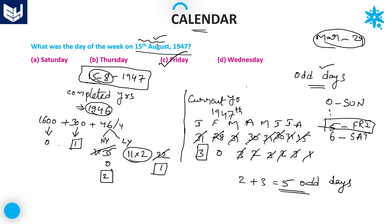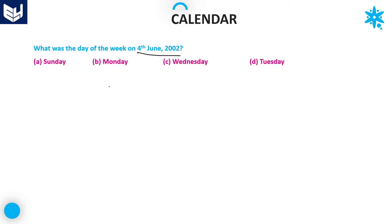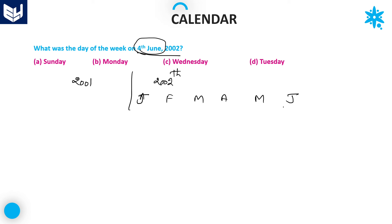Now I will explain a few more problems. Let's move on to the next question: 4th June 2002. Since we are continuously solving these kinds of problems, 2001 years are already completed and the current year is 2002. We are calculating 4th June, so we write days up to 4th June: January, February, March, April, May, and then 4 days in June. Since 2002 is not a leap year, February has 28 days, and January has 31 days.